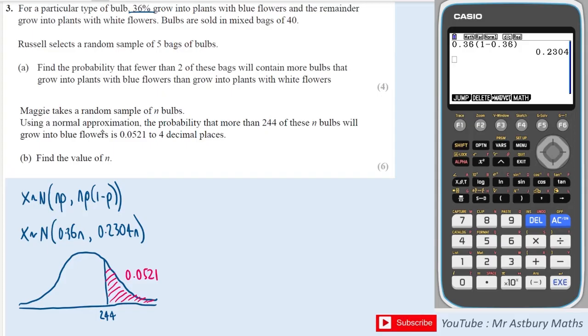Also with the normal approximation, because we are approximating a binomial and binomial only has discrete values, only whole numbers, the normal distribution is continuous so it could take any number even including decimals. Even though of course you can't have a decimal value of a bulb, because we are approximating we are going to have to imagine we could. What is the smallest number which would round to more than 244?